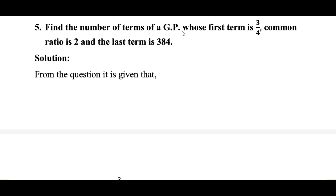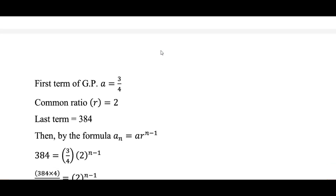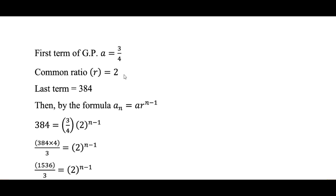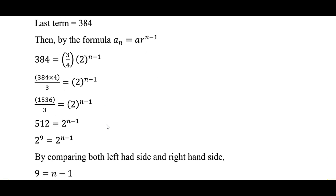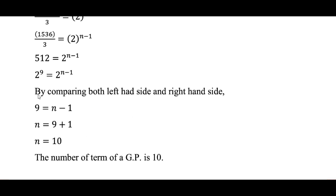Find the number of terms of a GP whose first term is 3/4, common ratio is 2, and last term is 384. Using the term formula AN = AR to the power n minus 1: 384 equals (3/4) times 2 to the power n minus 1. Simplifying gives 2 to the power 9 equals 2 to the power n minus 1. By comparing, n minus 1 equals 9, so n equals 10. The number of terms is 10.